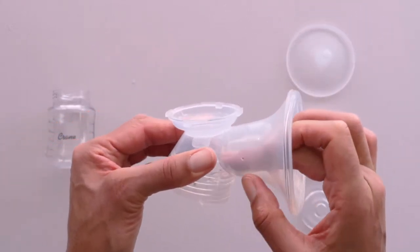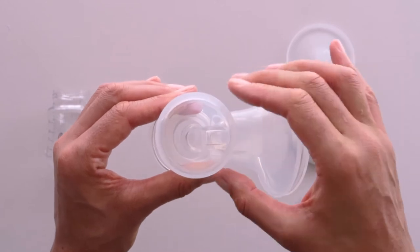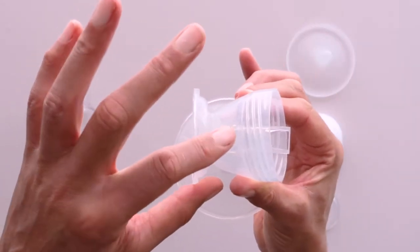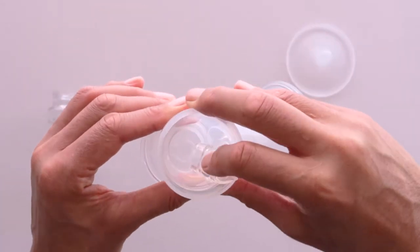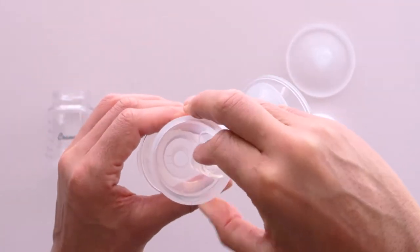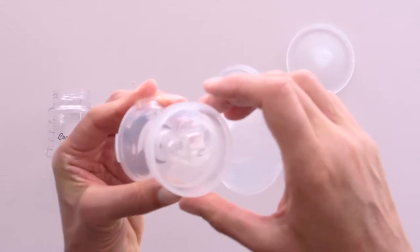Insert the silicon 3D cushion into the breast shield body. Secure the valve. Once the cushion is inserted into the breast shield body, gently push upwards on the valve to ensure it's securely attached.